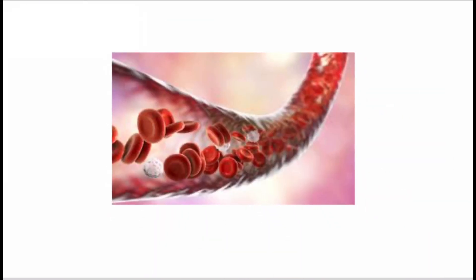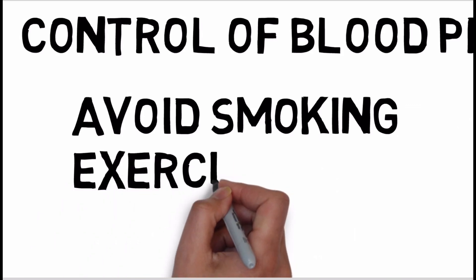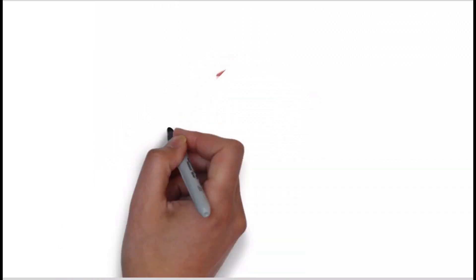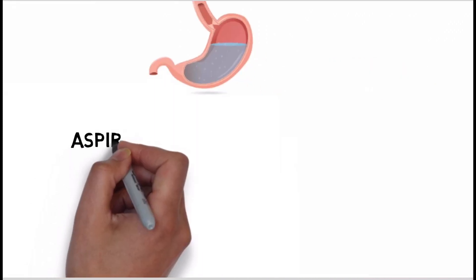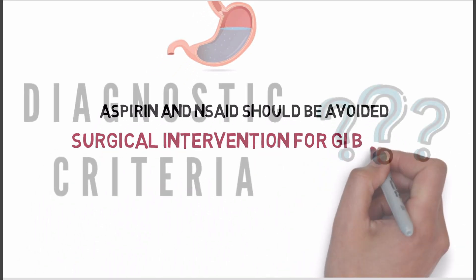For the cardiovascular system, control of blood pressure and serum lipids is very important. The patient should avoid smoking and exercise regularly — similar to advice for any peripheral vascular disease. For intermittent claudication, low-dose acetylsalicylic acid, pentoxifylline, cilostazol, or clopidogrel can be prescribed. Low-dose aspirin therapy can be done for cardiovascular disease if not contraindicated. For GI disease, NSAIDs and aspirin should be avoided as they increase bleeding risk. Surgical intervention may also be required if the patient bleeds.